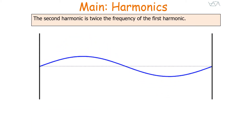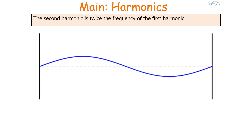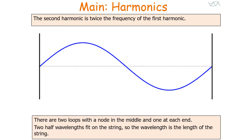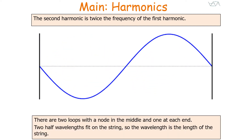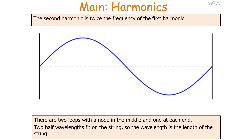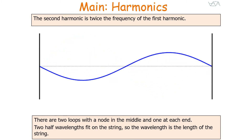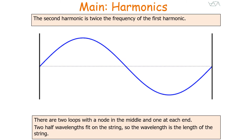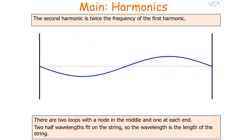The second harmonic is twice the frequency of the first harmonic. With the second harmonic there are two loops with a node in the middle and one at each end. So there are two half wavelengths fitting on this string, and therefore the wavelength of our stationary wave is equal to the length of the string it's formed on.